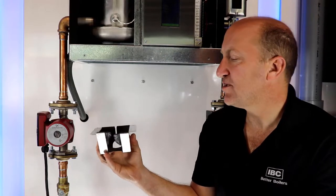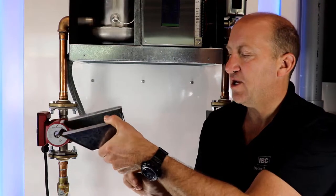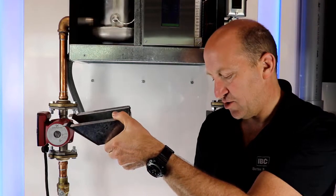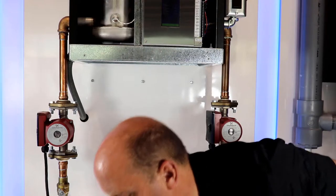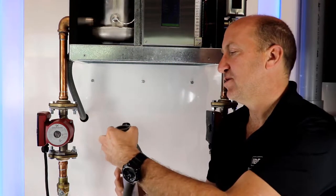Before you install the condensate trap, note which side the drain pipe exits the pan. Take your condenser trap.